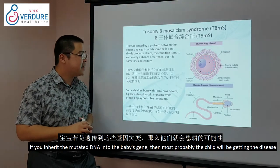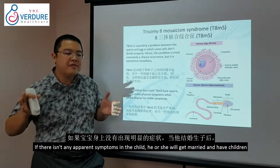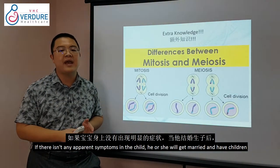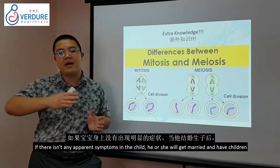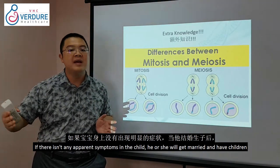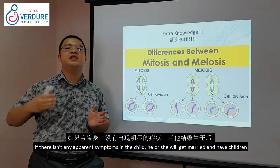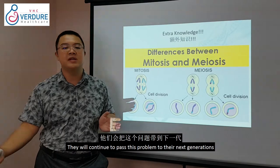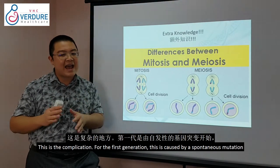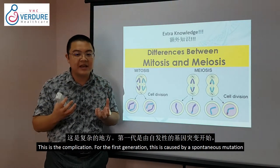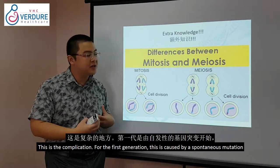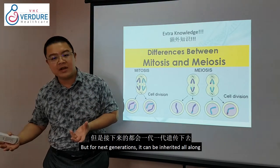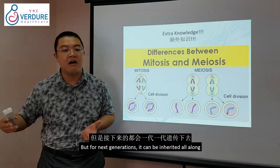If there's no apparent symptom in a child with this condition, they will go on to get married and have children, continuing to pass this problem to the next generation. For the first generation, it is caused by spontaneous mutation, but for subsequent generations it can be inherited.